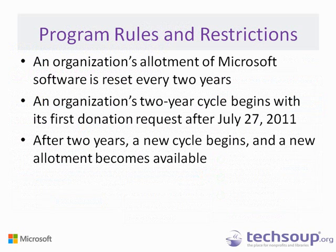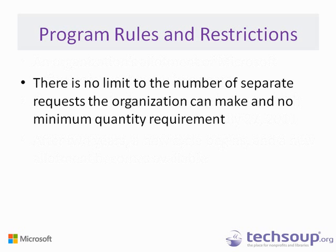Program Rules and Restrictions: an organization's allotment of Microsoft software is reset every two years. It used to be that the cycle renewed every time somebody placed an order. Now, after July 27, 2011, it is a fixed date — once you place a Microsoft request, a new cycle begins and your anniversary date is always the date of your first Microsoft request after July 27, 2011. There is no limit on the number of separate requests an organization can make, and no minimum quantity requirement.